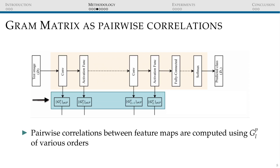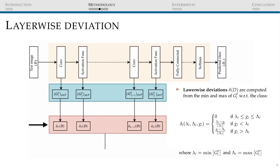Let's review the overall algorithm with a diagram. First, pair-wise correlations between feature maps are computed using high-order Gram matrices. The original method uses an order from 1 through 10. Observe that the method uses both convolutional and activation layers. Next, from the Gram matrices, we compute the class conditional layer-wise deviation. This basically allows us to compute how much a new sample deviates from the max and min values computed from G over the training data.